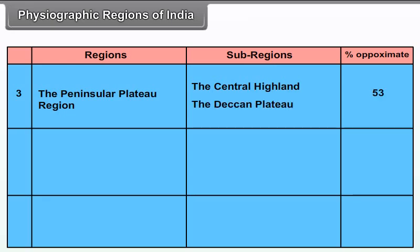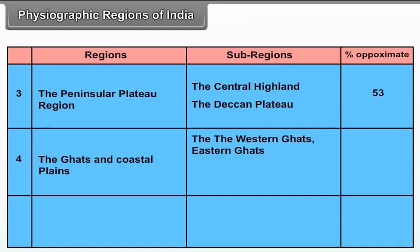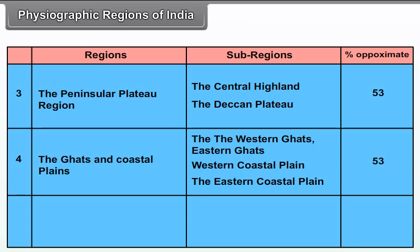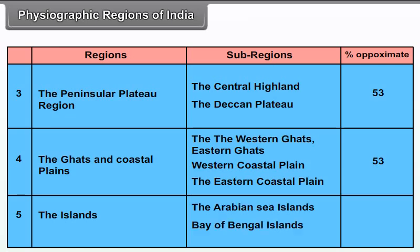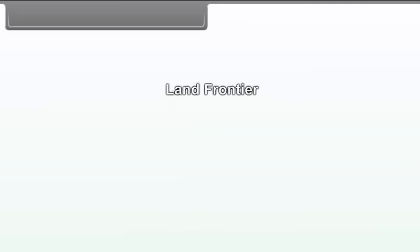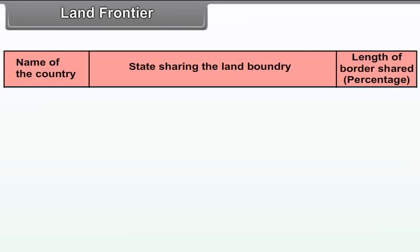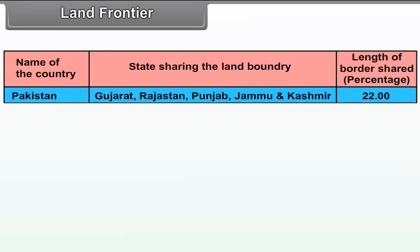The physiographic regions of India include: the Northern Plain region — covering the deserts, western plain, central plain, and delta and eastern plain, comprising 32% of the area. The Peninsular Plateau region — including the central highlands and Deccan Plateau — and the Ghats and Coastal Plains comprising the Western Ghats, Eastern Ghats, western coastal plain, and eastern coastal plain. The Islands include the Arabian Sea Islands and Bay of Bengal Islands.